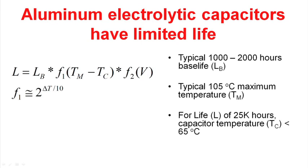So the first function is a pretty simple one. This function of the applied temperature to the capacitor is F1 equals 2 to the delta T divided by 10. And so very simply, this says that the life of the capacitor halves for a 10°C rise in the operating temperature of the capacitor. So that means that if you have an application where you want to have a 25,000 hour life, you have to limit the capacitor temperature to about 65°C.